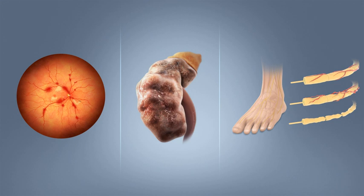Insulin can inhibit the breakdown of glycogen or the process of gluconeogenesis; it can stimulate the transport of glucose into fat and muscle cells, and it can stimulate the storage of glucose in the form of glycogen. Insulin is released into the blood by beta cells found in the islets of Langerhans in the pancreas, in response to rising levels of blood glucose, typically after eating. Insulin is used by about two-thirds of the body's cells to absorb glucose from the blood for use as fuel, for conversion to other needed molecules, or for storage. Lower glucose levels result in decreased insulin release from the beta cells and in the breakdown of glycogen to glucose. This process is mainly controlled by the hormone glucagon, which acts in the opposite manner to insulin.